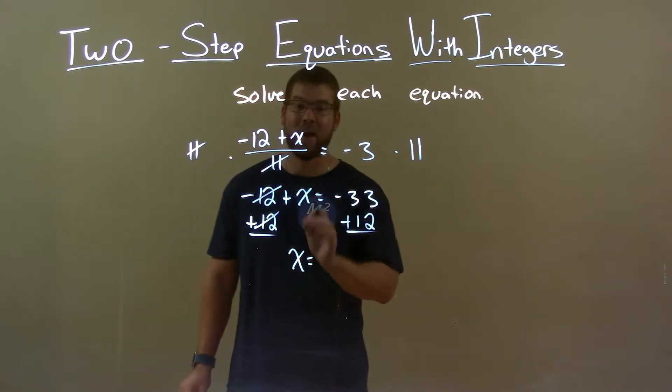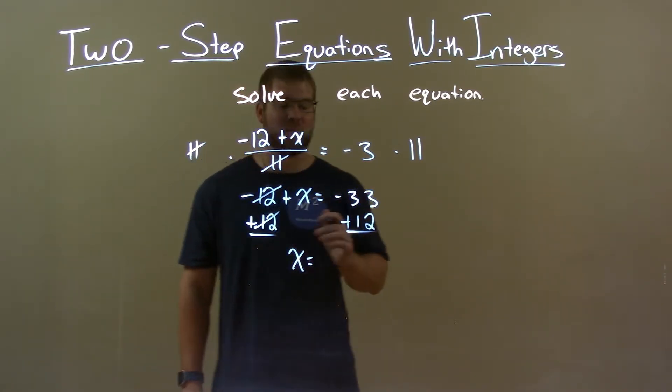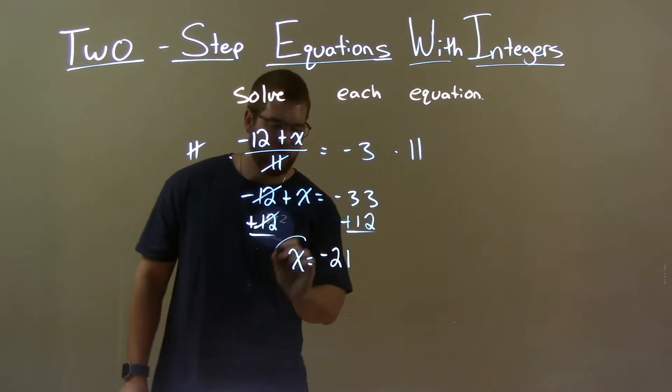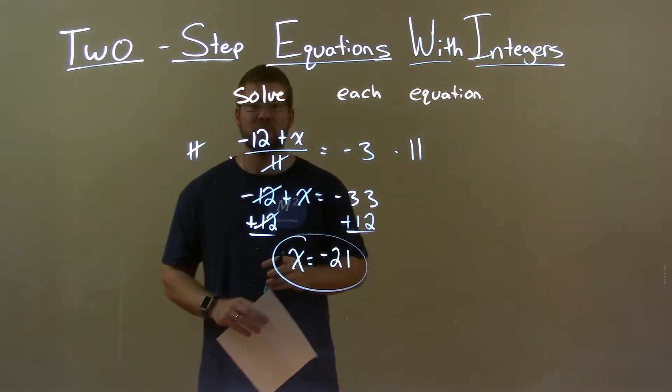Negative 33 plus 12 is negative 21, and so my final answer is x equals negative 21.